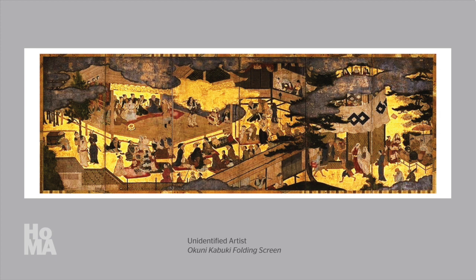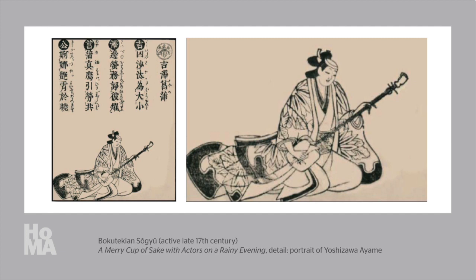By 1629, however, rumors that some of the dancers were moonlighting as prostitutes impelled the shogun to ban women from the kabuki stage entirely. Immediately after women were forbidden from performing, they were replaced by teenage boys, wakashu. And so began the second era of kabuki: wakashu kabuki. Ironically, in 1652, these young men were banned from the stage as well because, just as the actresses had done, they developed improper relationships with some of their fans. Records of popular wakashu actors such as Yoshizawa Ayame that date to the end of the 17th century, however, indicate that this ban was not strictly enforced.